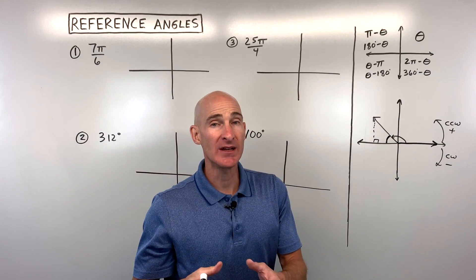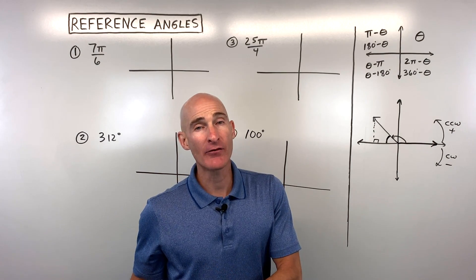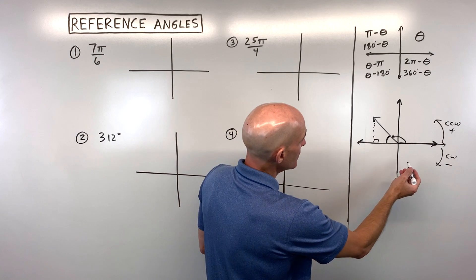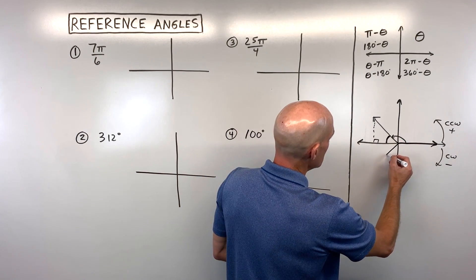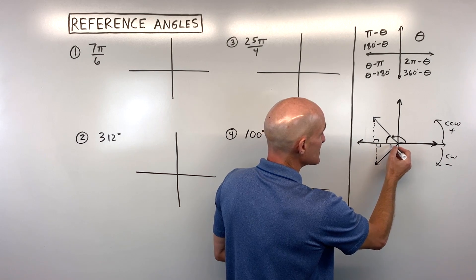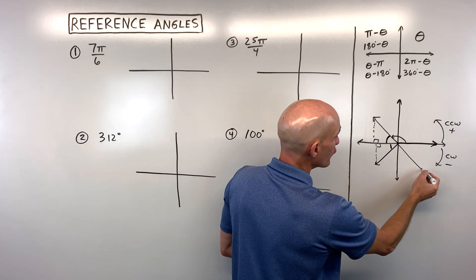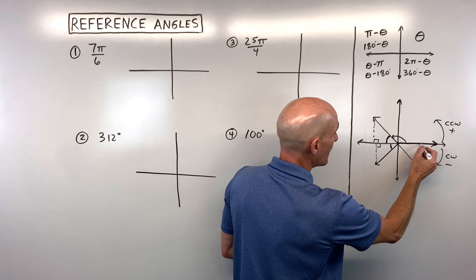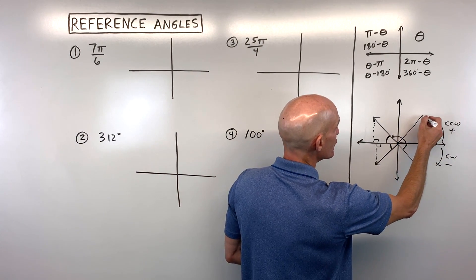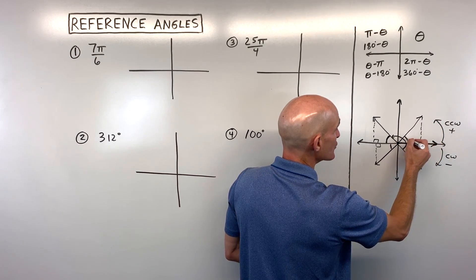Your reference angle is going to be the angle between the terminal ray and the x-axis. It's going to be an angle between 0 and 90 degrees if you're in degrees, or 0 and pi over 2 if you're in radians. If you stop somewhere in the second quadrant, you drop the perpendicular to the x-axis and there is your reference angle. Same thing in the fourth quadrant or the first quadrant.